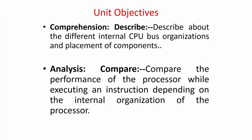In summary, we will study the three-bus architecture — how control signals change and how different component requirements change, including the ALU, program counter, memory data register, and memory buffer registers. The basic objectives of this unit are: first, to describe different internal CPU bus organization and placement of components; second, to compare processor performance while executing instructions depending on whether it is a single bus, two-bus, or three-bus architecture — including number of steps required, how control signals change, and the advantages.